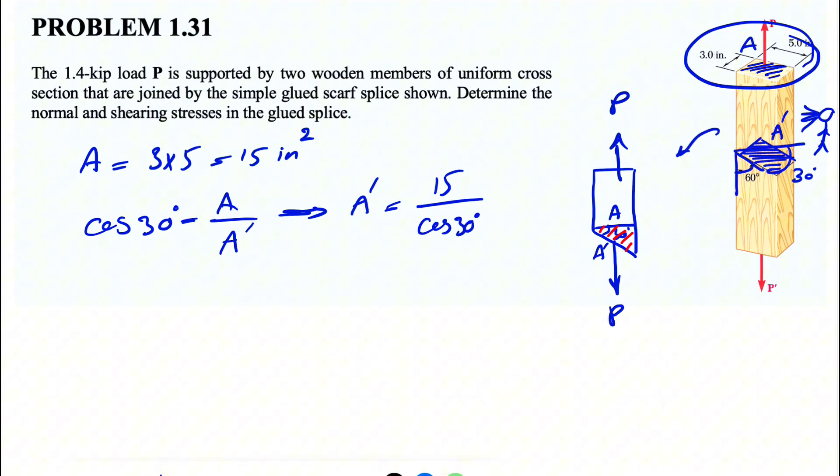So before we go to the next step, we have to find or dissolve P into two components parallel and perpendicular to the surface. We know this angle here is 30 degrees too. And since we have this angle here, 30 degrees, when we have another angle...